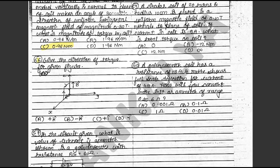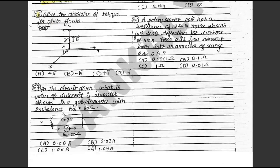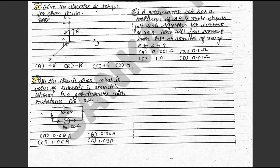Question 56: Give the direction of torque for the given figure. The answer is D: minus I cap. This is in textbook exercise 24. Question 57: In the given circuit, what is the value of current if the meter shown is a galvanometer with resistance Rg = 60 ohm? The answer is B: 0.05 ampere. This is in textbook illustration 13, part A.